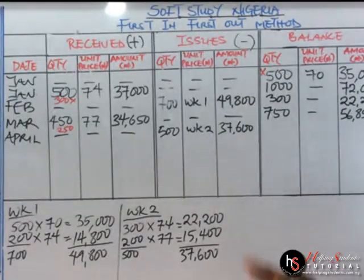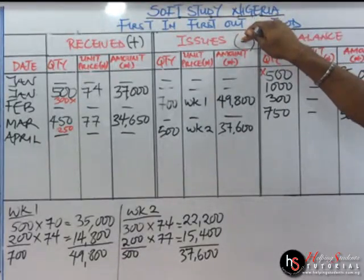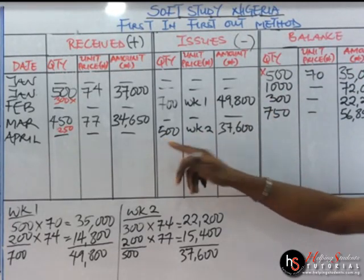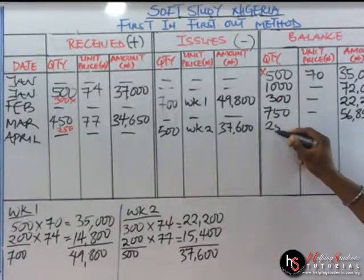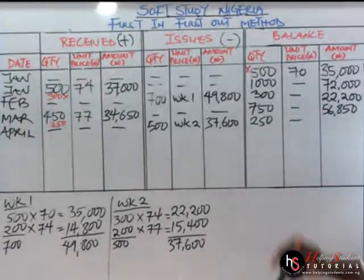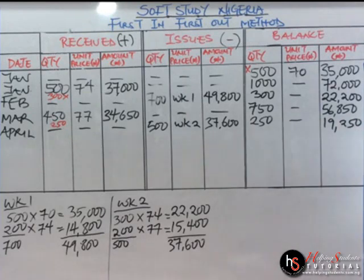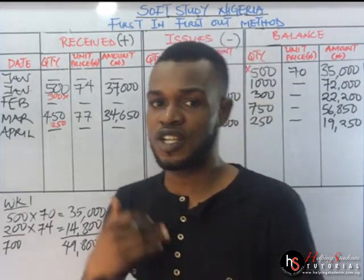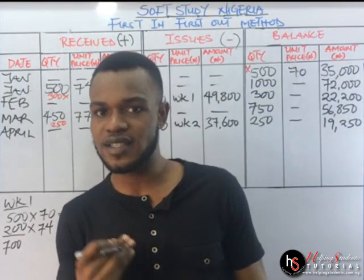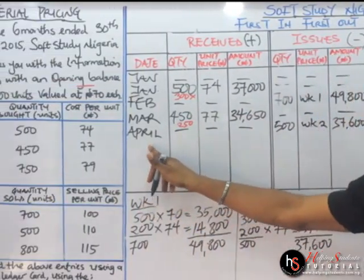Coming over to the balance section — because it is an issue, it is subtracted. 750 minus 500 gives us 250 units. Then 56,850 minus 37,600 gives us 19,250. We have 19,250 as our closing balance. I hope you understand the steps — please practice this daily and try several questions for a better understanding. We are done with April.